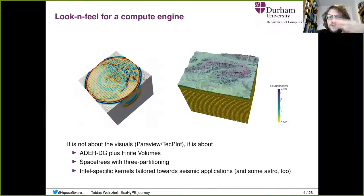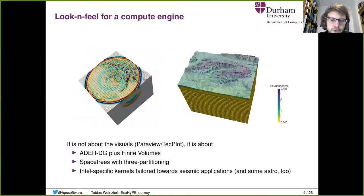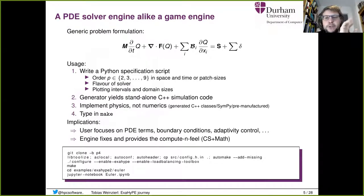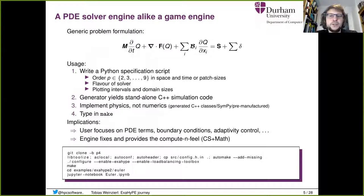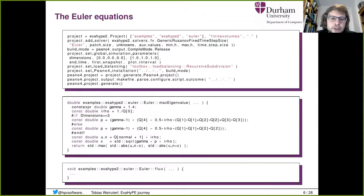The idea is that if you use our software, you buy into a certain numerical class: we use ADER-DG plus finite volumes, space trees for mesh partitioning, and in the original proposal, architecture-specific kernels. What we ended up with is: you write a Python spec file where you say what kind of order you want, what solver flavor, then run a generator, implement some physics, type make, and everything works. The stuff is all open source.